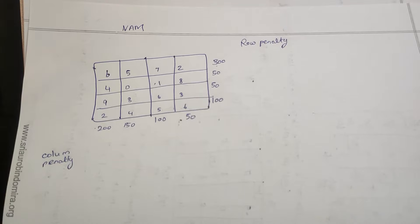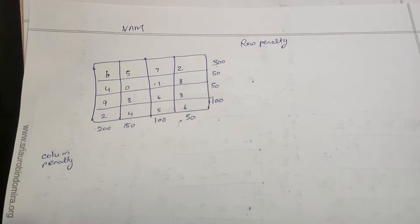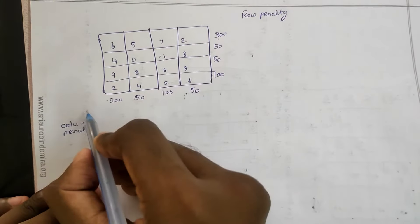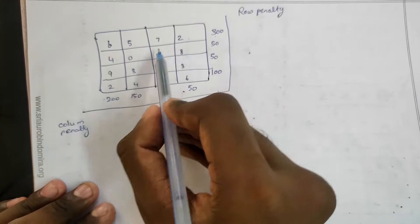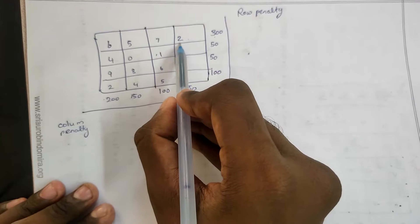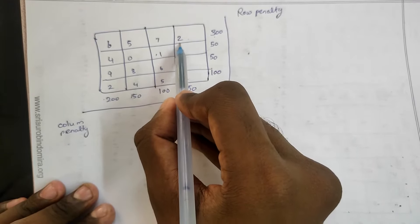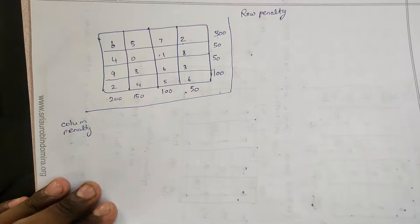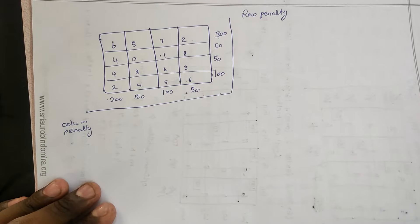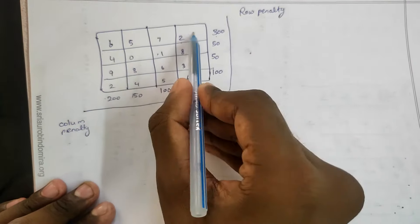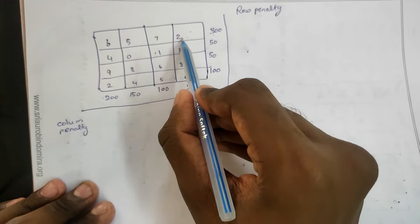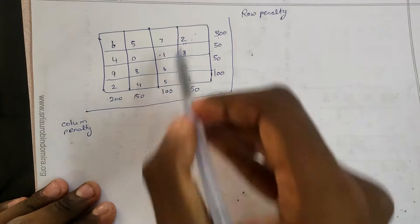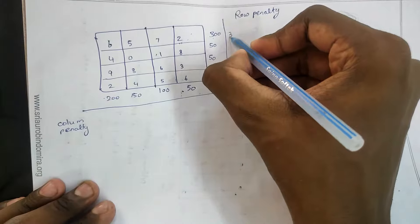We will talk about the godowns and warehouses. First, we will talk about the penalty. What is the penalty? There is a smallest number in the least minimum, and the small number in the least minimum is subtracted. This is the row penalty. In this row, the least number is 2, and the next least number is 5. So, 5 minus 2 equals 3.